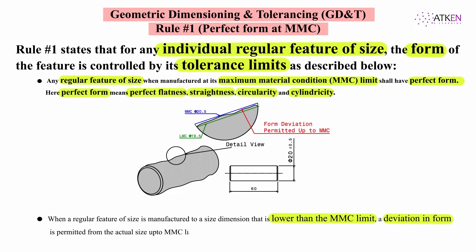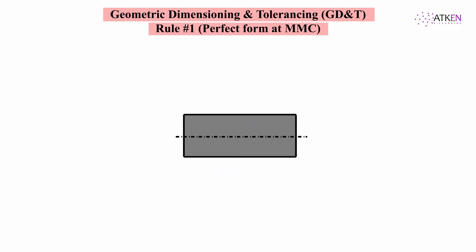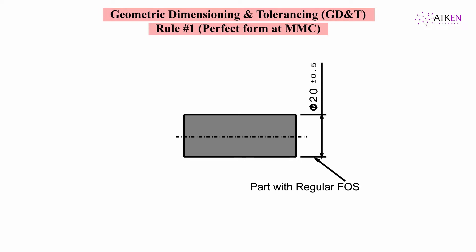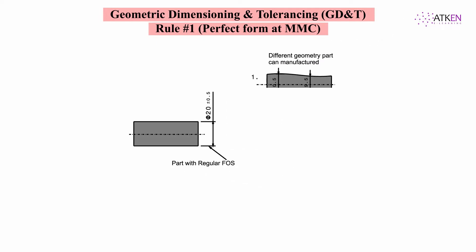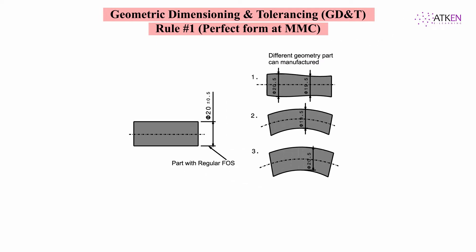The deviation in form is permitted from the actual size up to the MMC limit. To understand Rule 1, let's take a part with a regular feature of size with limits of size of diameter 20 plus or minus 0.5.